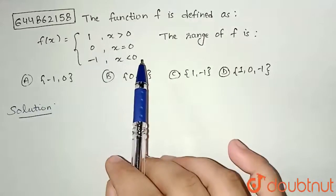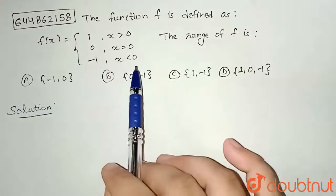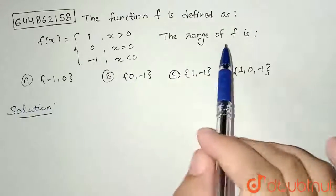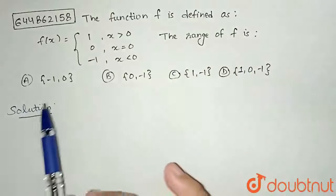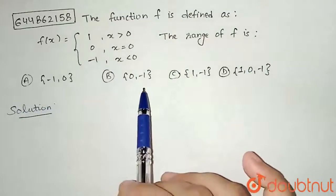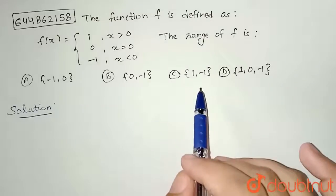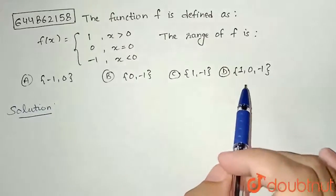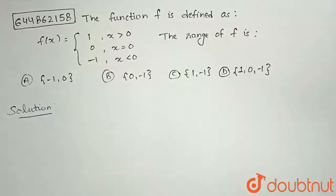0 for x equal to 0 and minus 1 for x less than 0. The range of f is option a minus 1 comma 0, option b 0 comma minus 1, option c 1 comma minus 1 and option d 1 comma 0 comma minus 1.